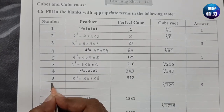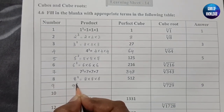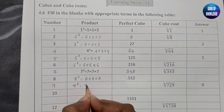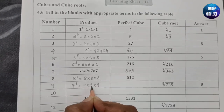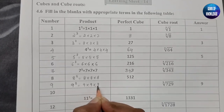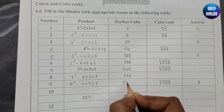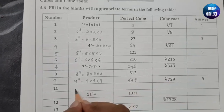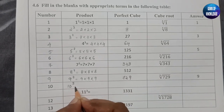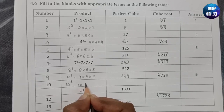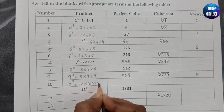Nine cube equals nine into nine into nine — nine nines are 81, and 81 into nine is 729. Ten cube equals ten into ten into ten, which is 1000.